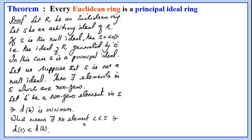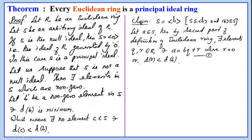This means there exists no element C in S such that D(C) is less than D(B). We shall show that S is generated by b, that is S equals ⟨b⟩. To show this, we first show S is a subset of ⟨b⟩, and ⟨b⟩ is a subset of S. Let A belong to S. Then by the second part of the definition of Euclidean ring, there exist elements Q and R in R such that A equals BQ plus R, where R equals 0 or D(R) is less than D(B). Let us call this 1.